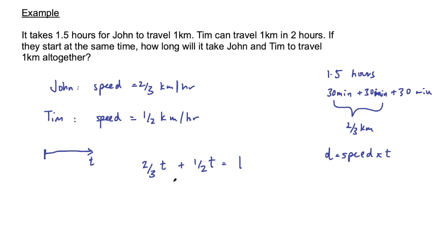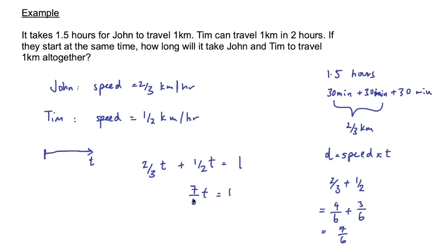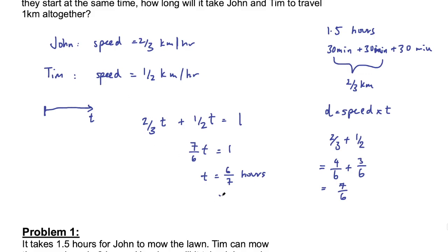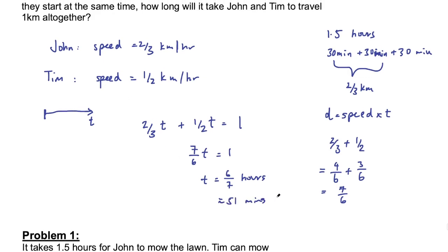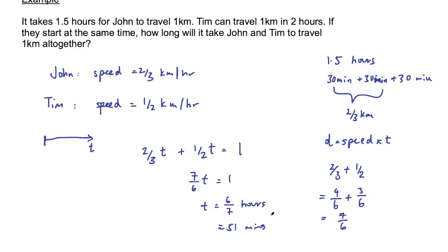We need to add the fractions two-thirds plus one-half. Multiplying to get a common denominator: four-sixths plus three-sixths equals seven-sixths. So we have seven-sixths times T equals one. Solving for T, we multiply both sides by six-sevenths, giving T equals six-sevenths of an hour, which is approximately 51 minutes. Six-sevenths hours or 51 minutes would both be fine as a final answer.